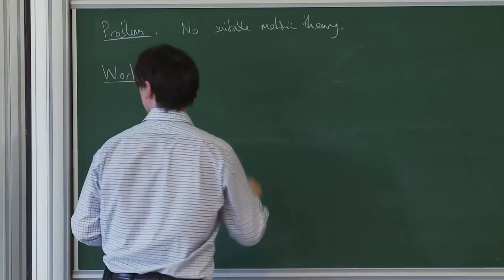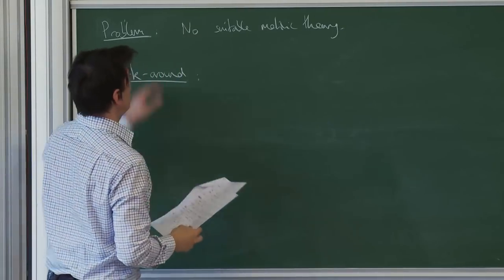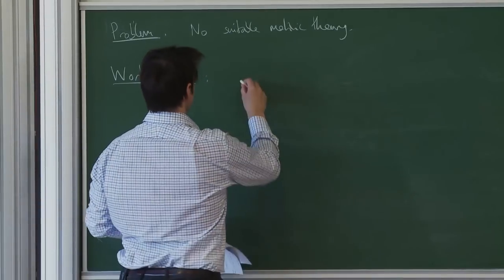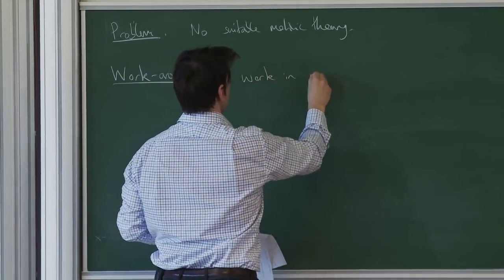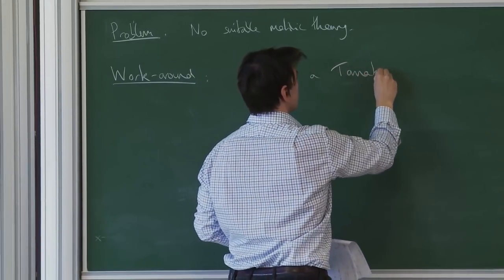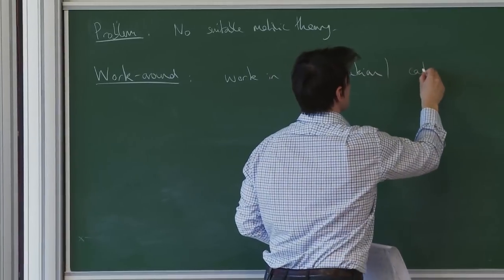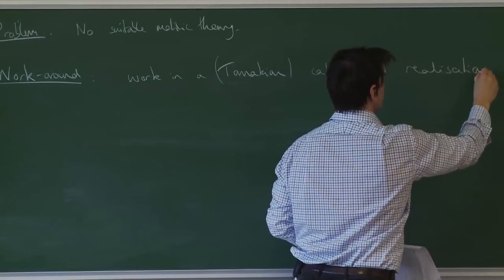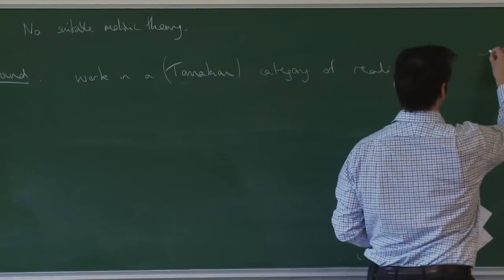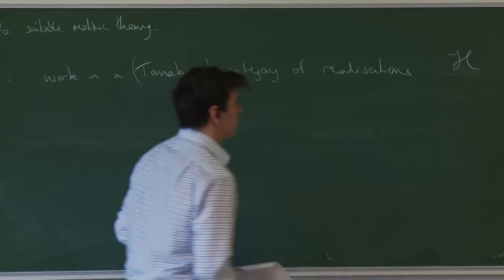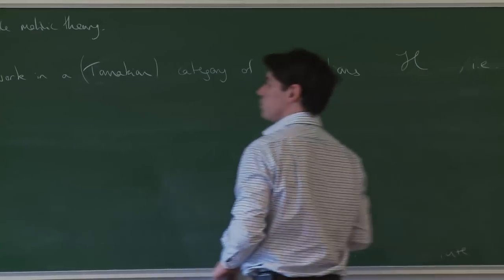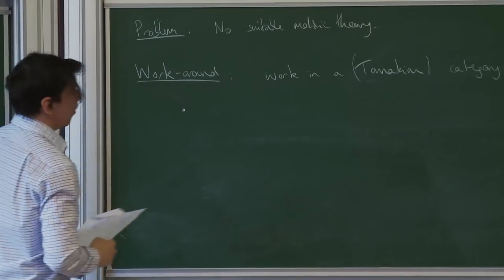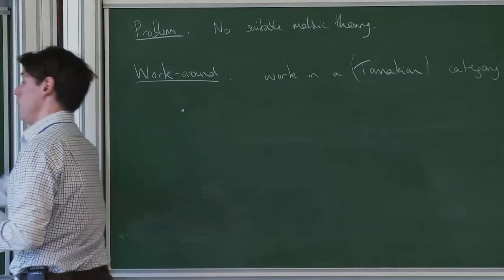The workaround — already used in Deligne's original paper on P1 minus three points — is to work in a Tannakian category of realizations. I would call such a category curly H. The objects we're studying will be, for each realization, a different copy of this completion.